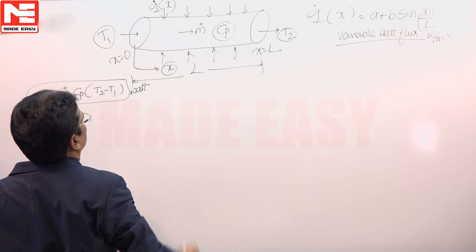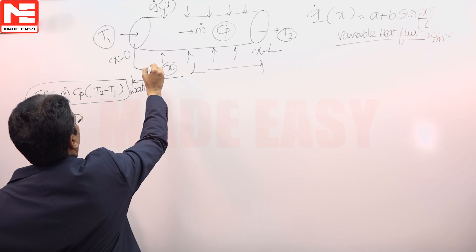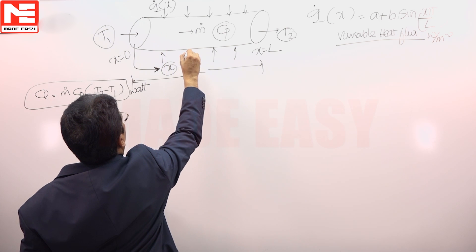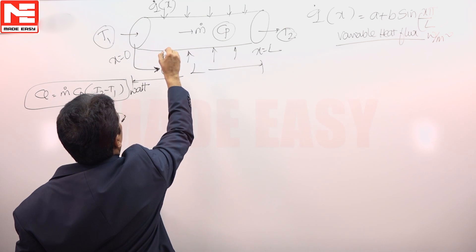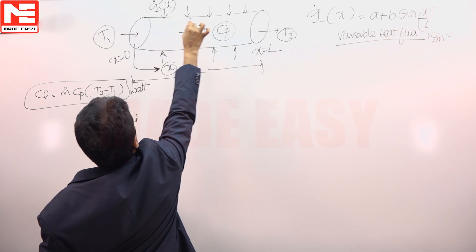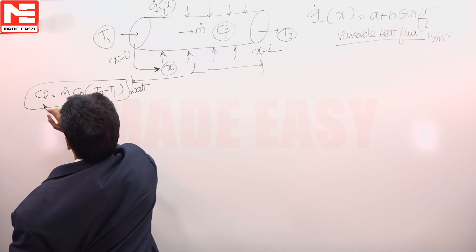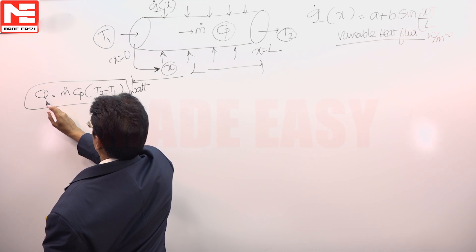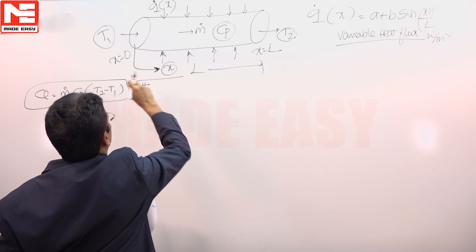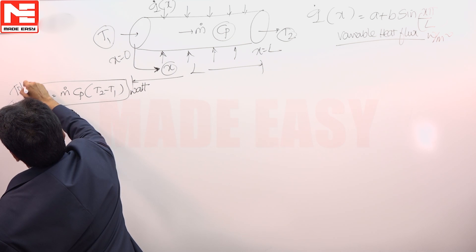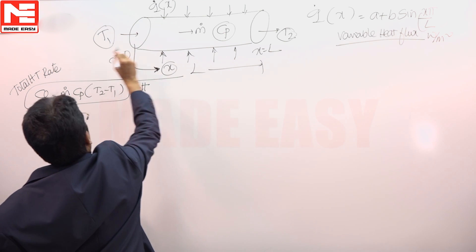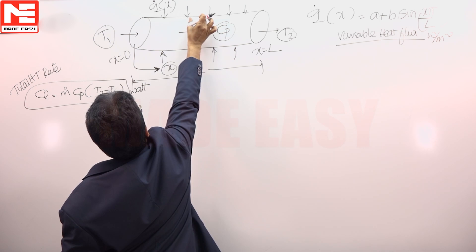Because the heat flux is varying, I cannot simply multiply the flux by the area. If the heat flux supplied were constant, you would multiply that constant heat flux by the heat transfer area πDL to get the total heat transfer rate for the entire pipe. But since it is a variable heat flux, the total heat transfer rate can only be obtained by integration.